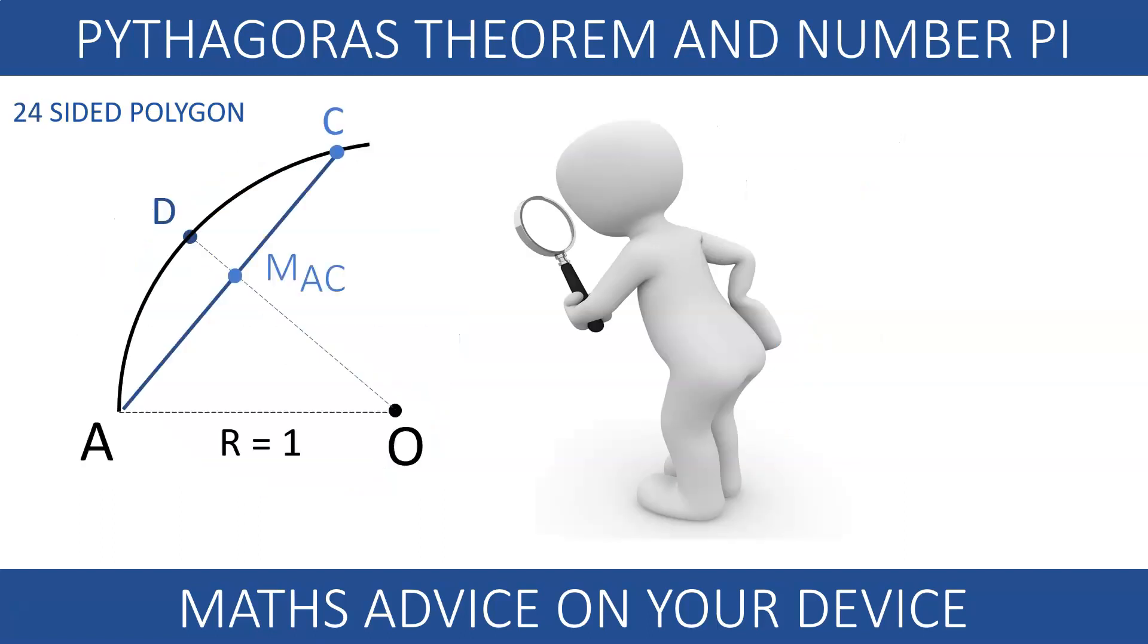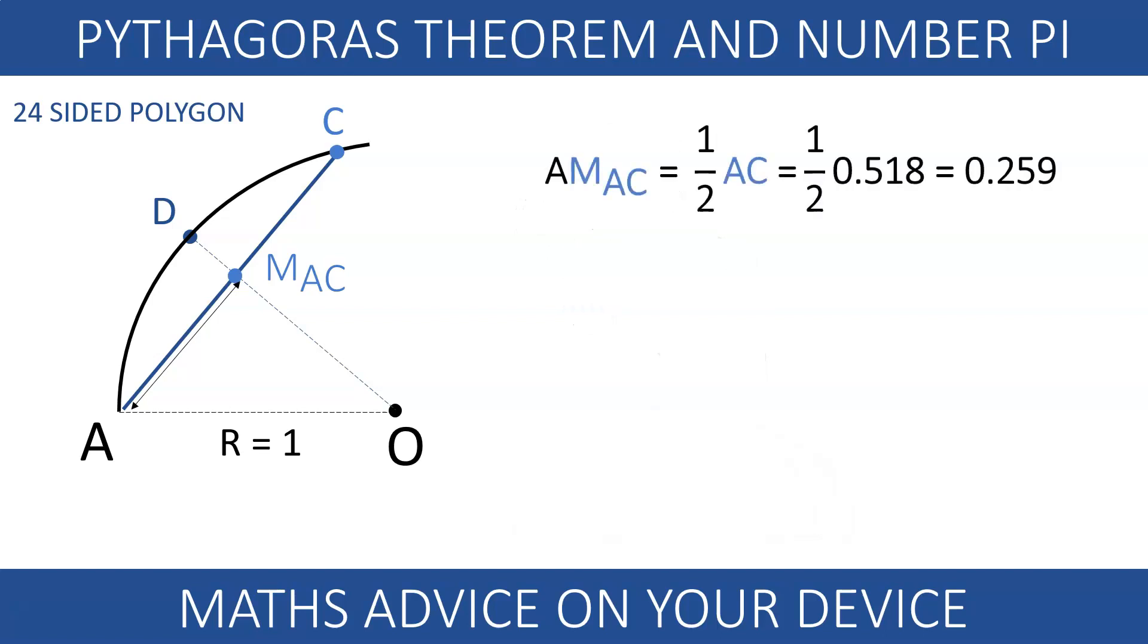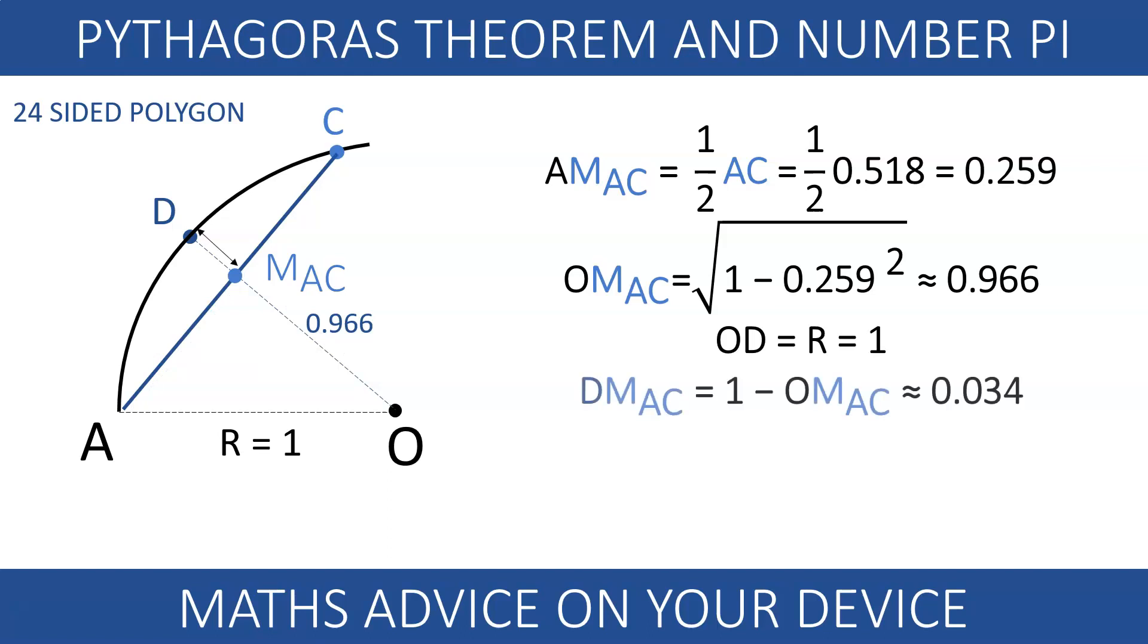Let's carry on. Again, we halve the previous side AC, which results in 0.259. We can now use Pythagoras twice. OM is the square root of the difference of 1 squared and 0.259 squared. We subtract this from 1 because OD is the radius and this is still 1. The length DM is 0.034. We use Pythagoras again to figure out the hypotenuse AD. The length of each side of this polygon is 0.261.